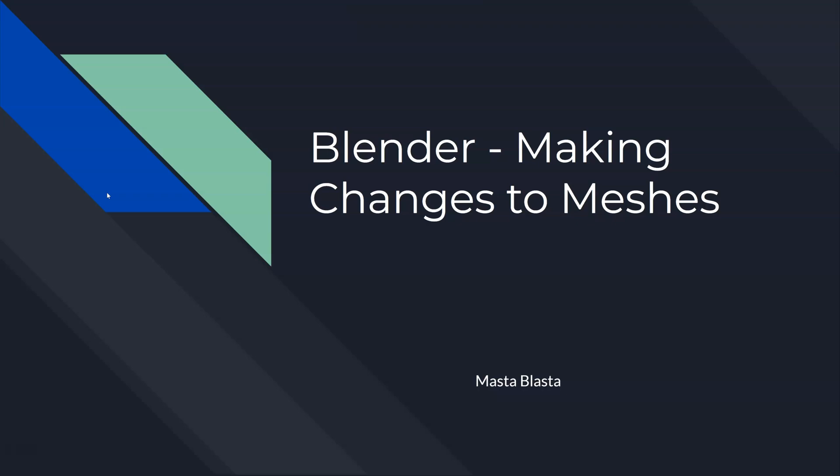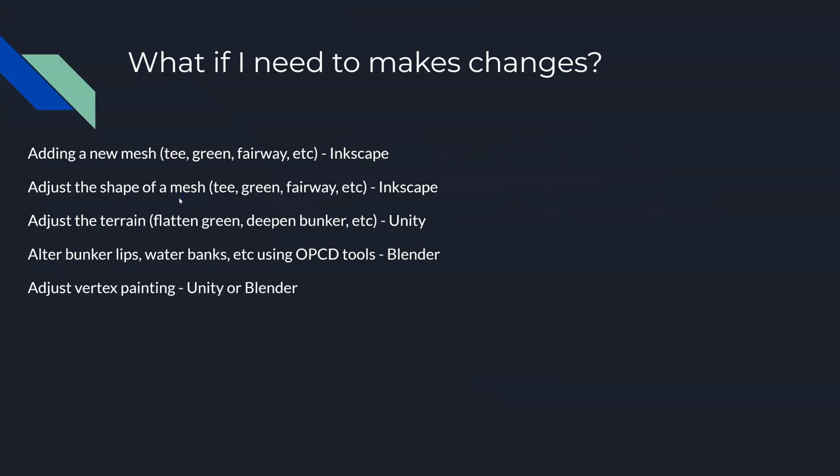Or you might be thinking: I've done all 18, I've gone into Unity, and I found something wrong — I need to change something. What do I do? This is going to give you some theory behind that. We're a little early in the process to explain everything, because you haven't seen how this all works in Unity yet, which is the next major section. But hopefully I'm going to give you some things to think about — what if I need to make some changes?